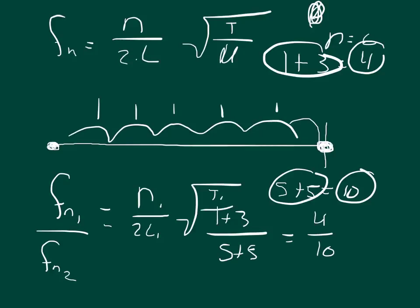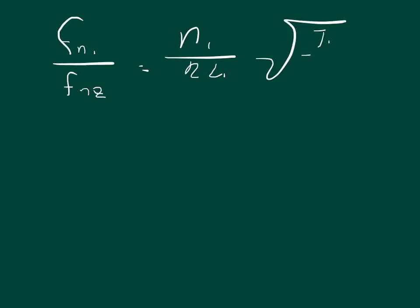let me just change this to another page. So we got Fn1 over Fn2 is equal to N1 over 2L1, square root of T1 over linear density 1, divided by N2 over 2L2,